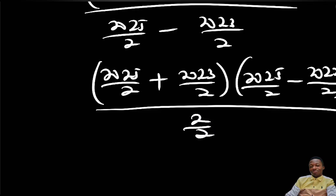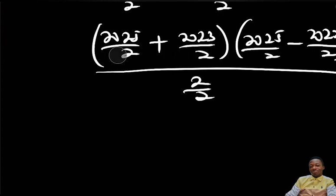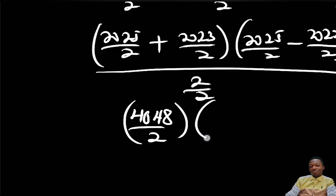So therefore here I'm also going to apply the LCM, which is 2. So I'll add the numerator, which I'm going to get 4048 divided by 2 bracket close. And then here too, I want to have the same thing as next, right? So you're going to give me 2 over 2, then divide by 2 over 2.